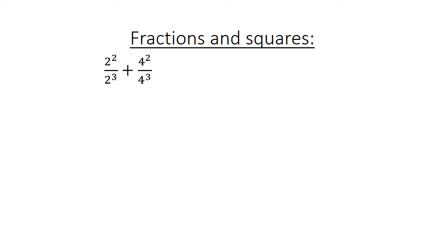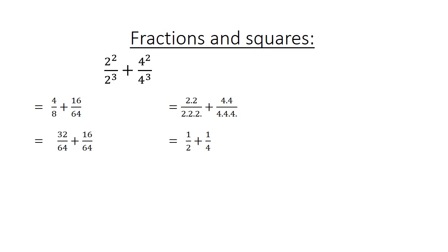Fractions and Squares: 2 to the power of 2 over 2 to the power of 3 plus 4 to the power of 2 over 4 to the power of 3 equals 4 over 8 plus 16 over 64. On your right hand side you can also simplify, which is equal to 32 over 64 plus 16 over 64. Remember to find the lowest common multiple, which is equal to 48 over 64. And if we simplify, it is equal to 3 over 4.